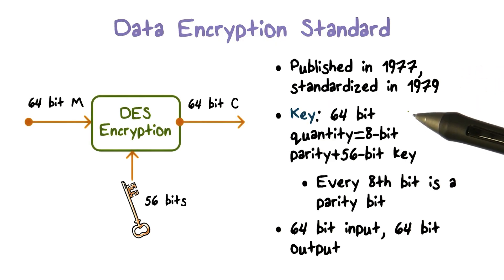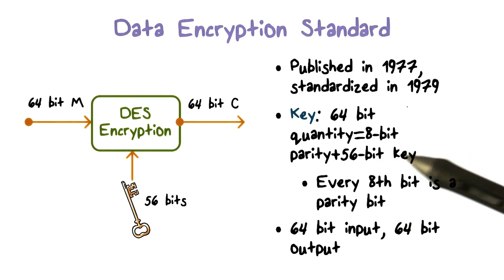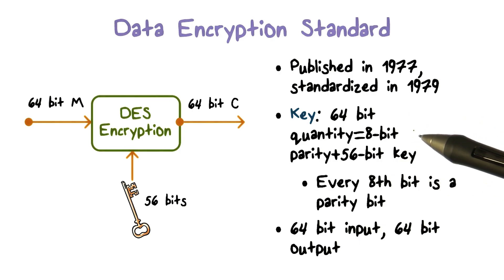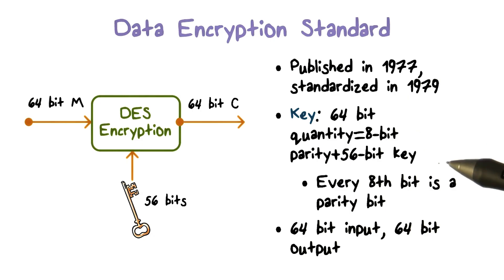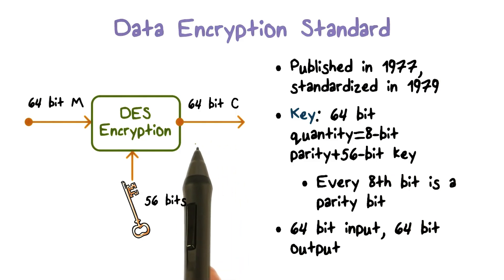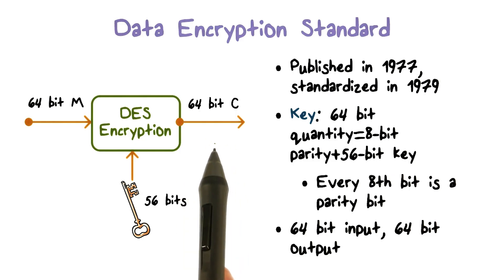In DES, the key is 64-bit, which is eight bytes. But for each byte, there is one parity bit. Therefore, the actual effective value in the key is only 56-bit. The output ciphertext is again a 64-bit block.